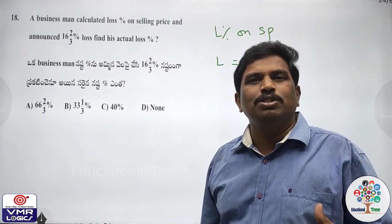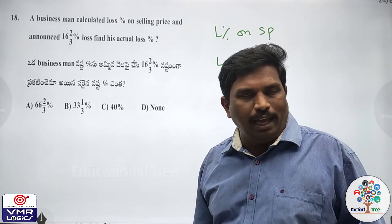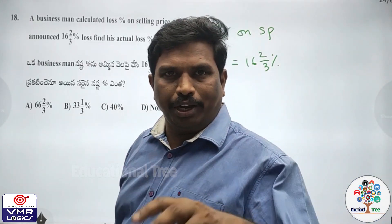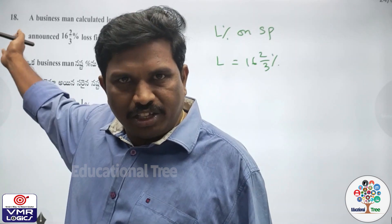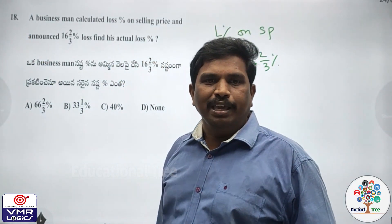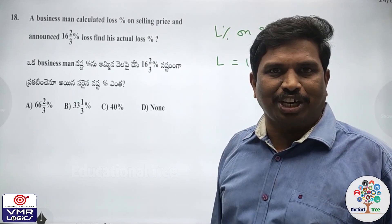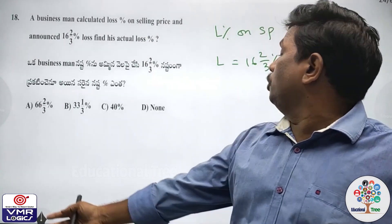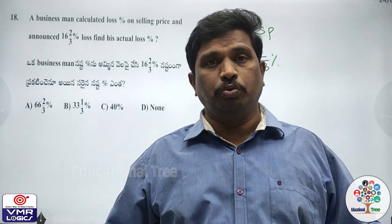What is the loss percent formula? Loss percent formula: loss by CP into 100. But the businessman's loss percent formula is: loss by SP into 100. He announced 16 and 2 by 3 percent loss.